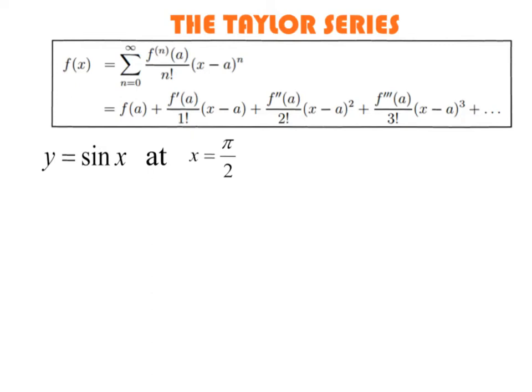So after seeing the proof of why these terms can work, now we're going to actually build a Taylor series. Again, we assume that we can find a series that represents a function. We'd have x minus a, and a is whatever value you want to start and have that point of tangency at.